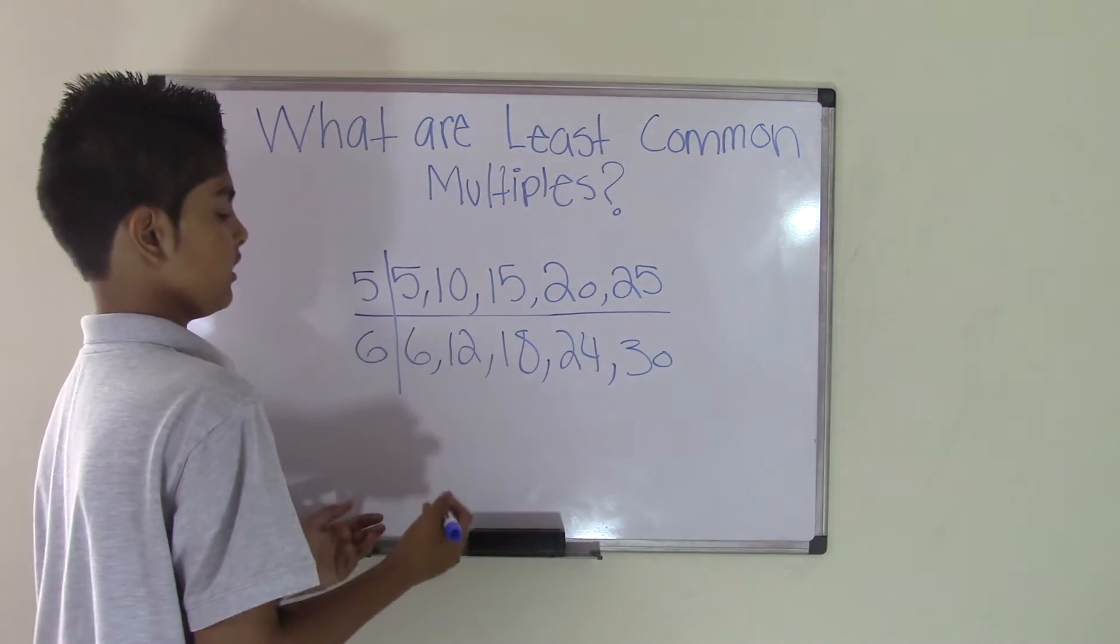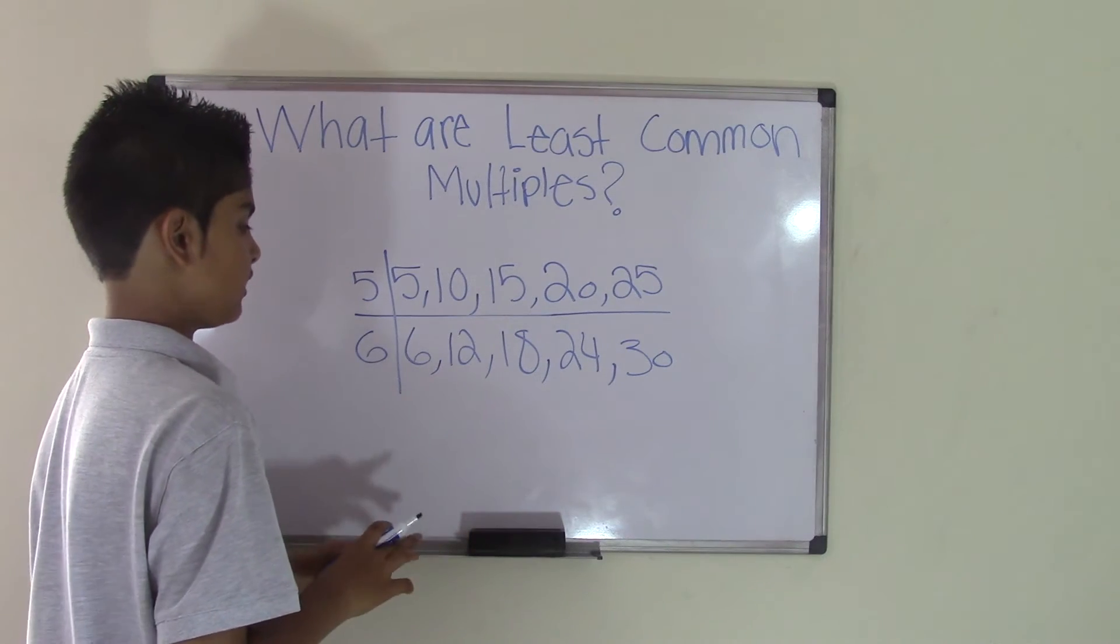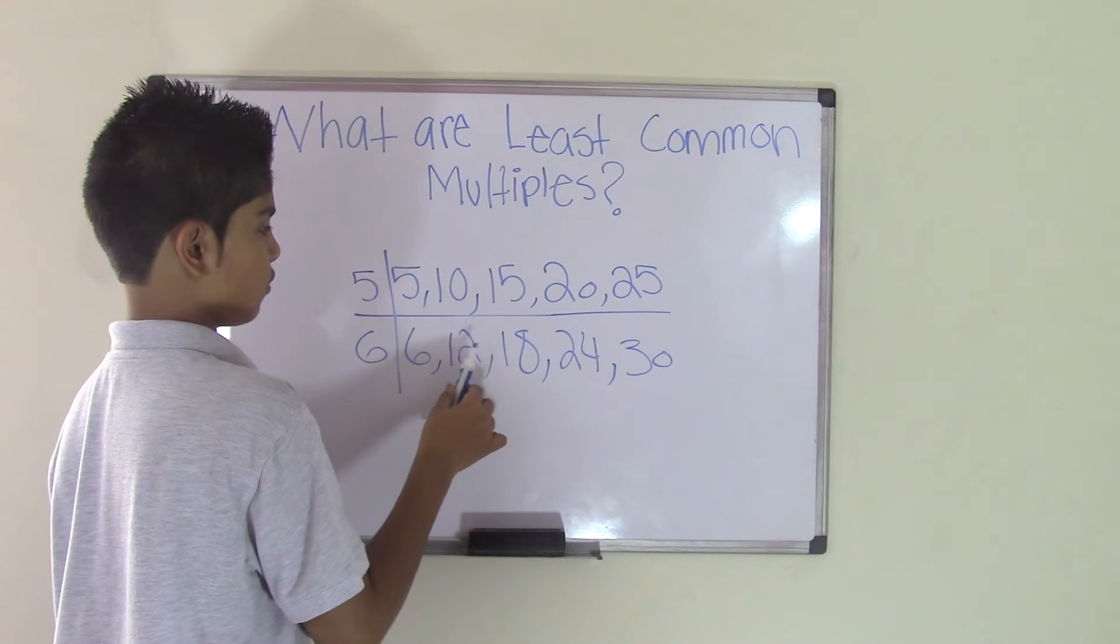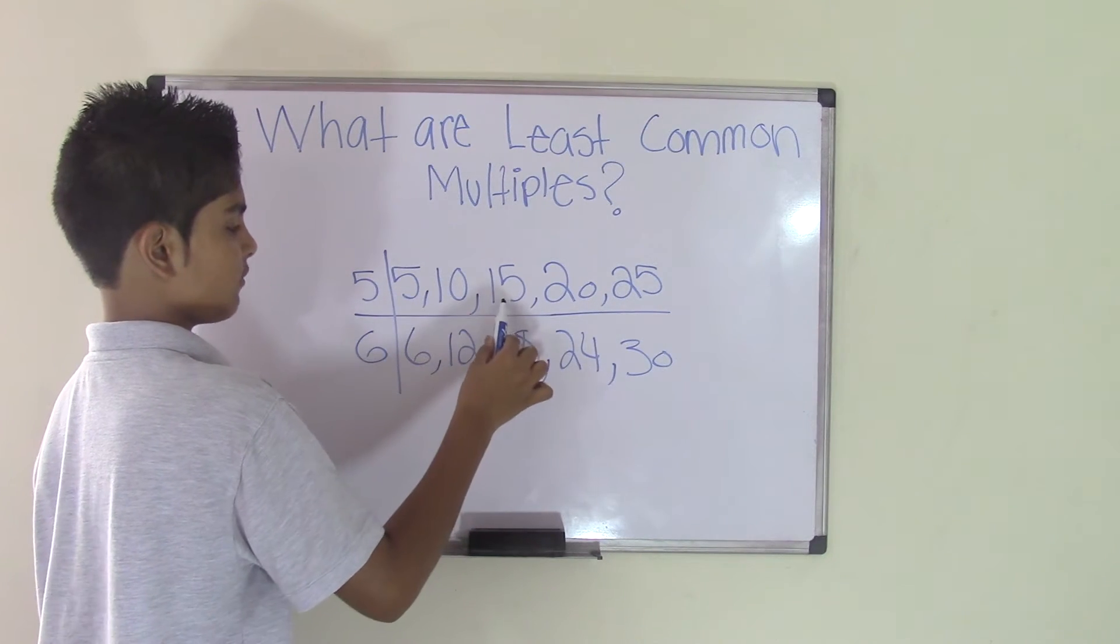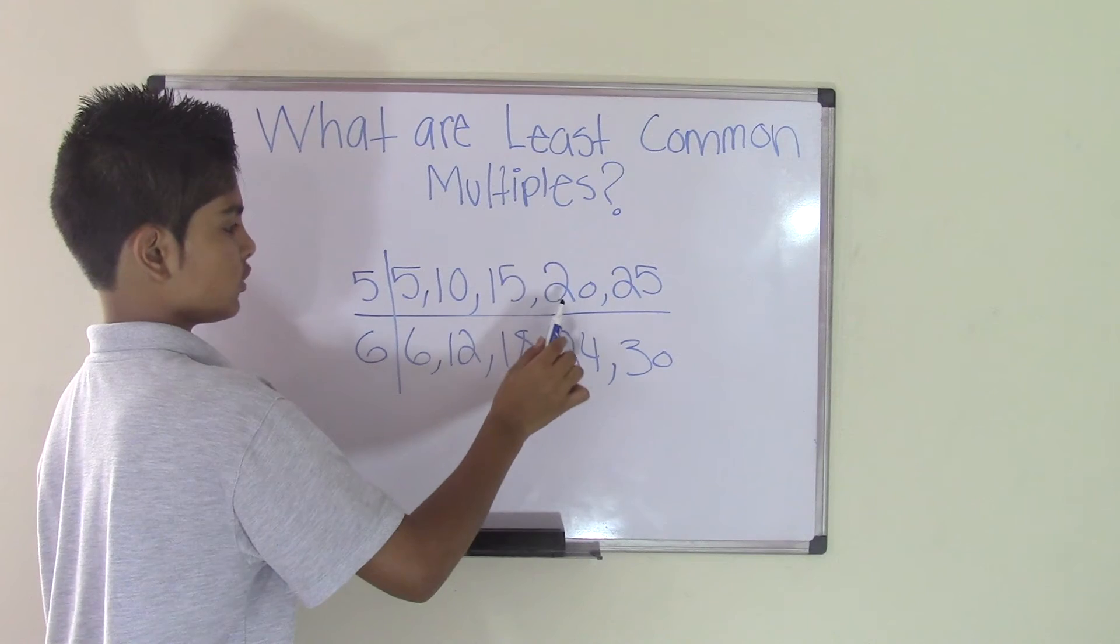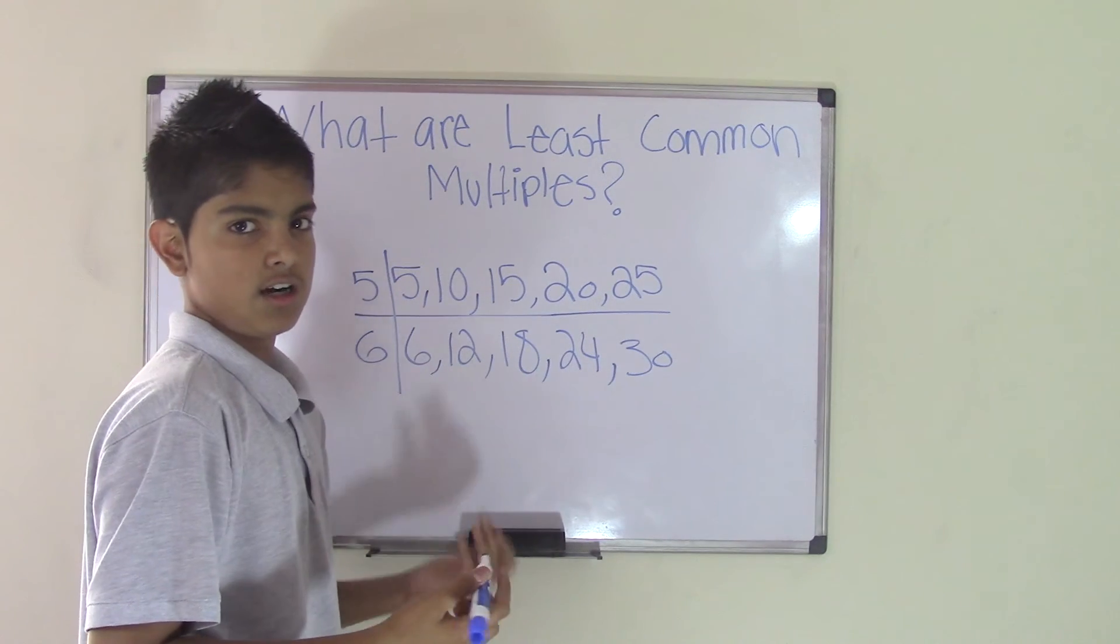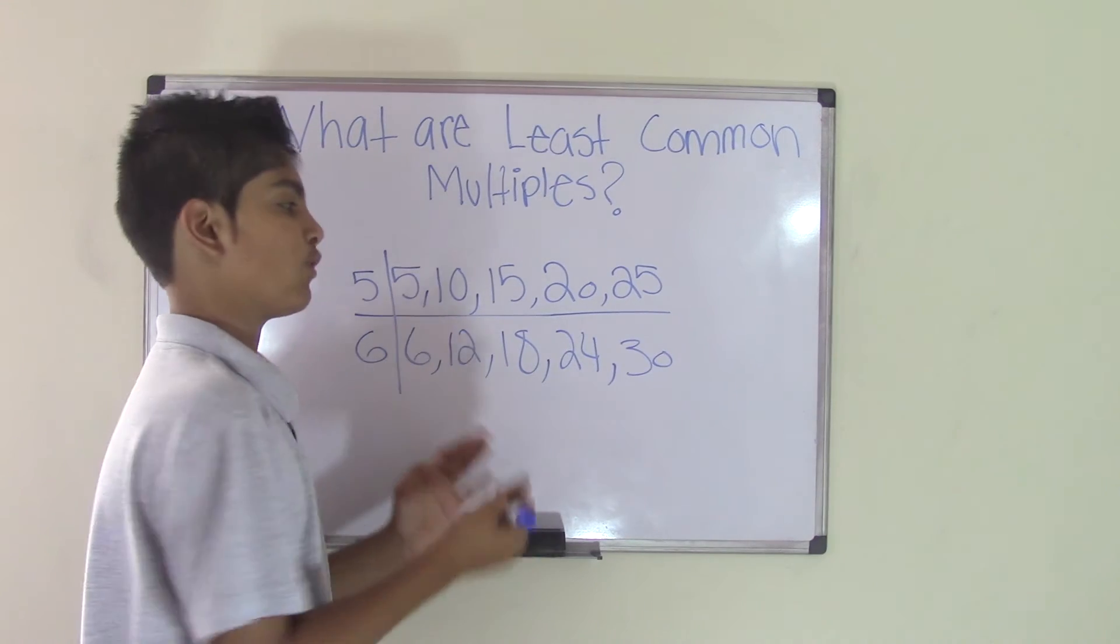Let's find the least common multiple. 5, there's no 5 in this. 10, no. 15, no. 20, no. 25, no. There isn't a common multiple at all, so let's go farther and write some more multiples.